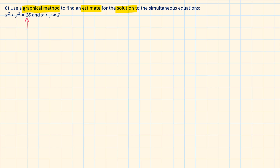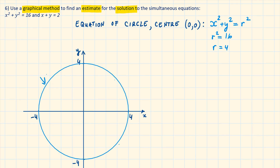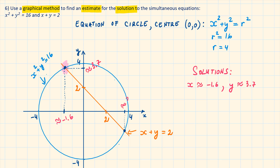In the first equation, 16 is the radius squared. The equation of a circle with centre at the origin is x squared plus y squared equals r squared, so the radius is 4. We draw the circle with centre 0 and radius 4. The straight line x plus y equals 2 crosses the x and y-axis at 2. The two approximate solutions are: when x equals minus 1.6, y equals 3.7; and when x equals 3.7, y equals minus 1.6.